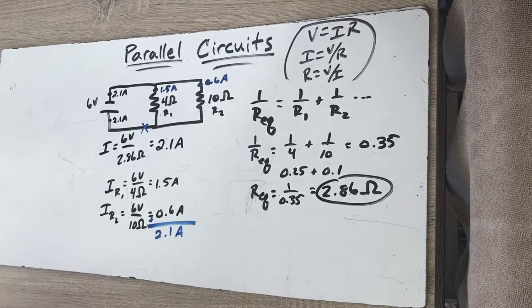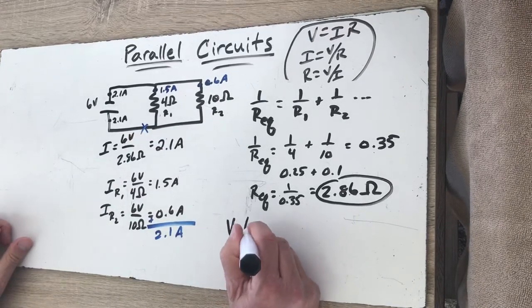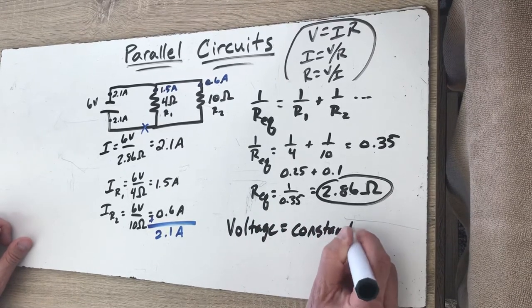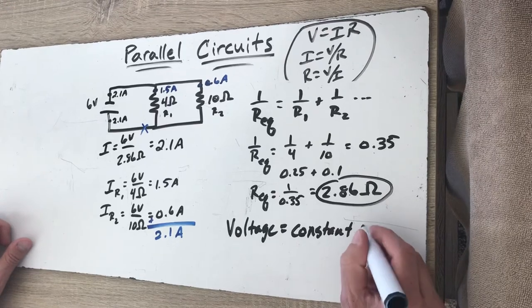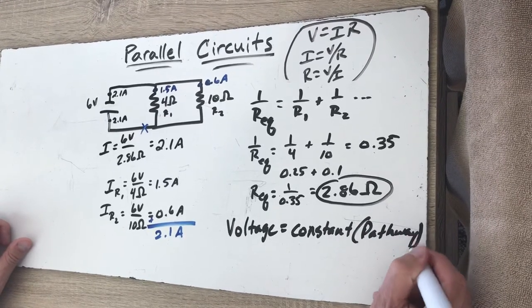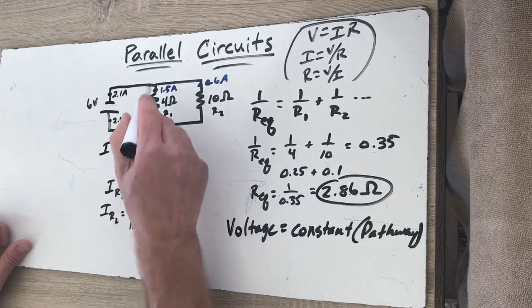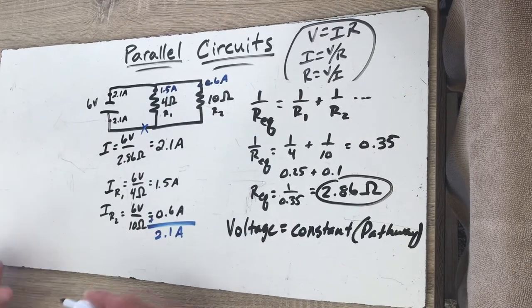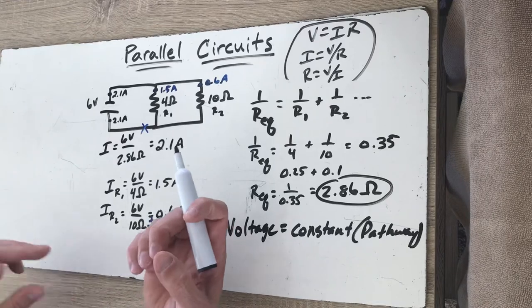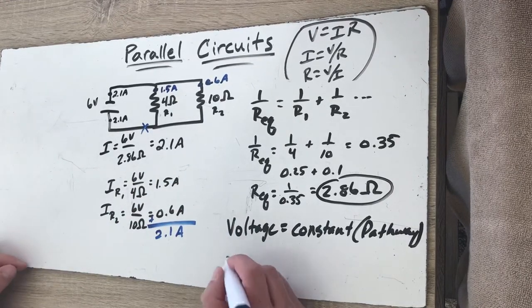Now the big takeaways from this. In parallel circuits, the voltage, that is constant for each pathway. It means each pathway is going to be supplied the same amount of voltage. The voltage doesn't split where the wires split. It's the same amount of push, just like the same amount of squeezing pressure. No matter how many holes you poke in a toothpaste tube, you're still squeezing with the same amount of pressure that each hole is going to experience.